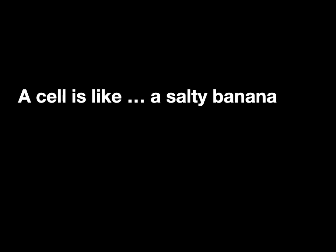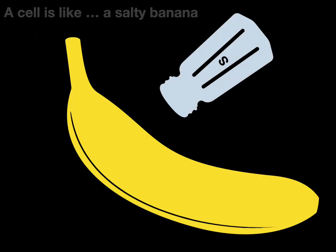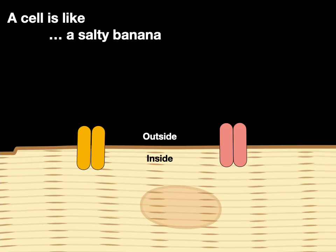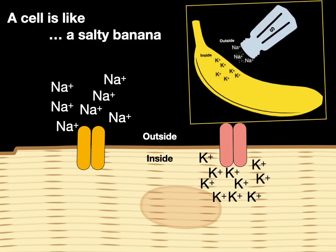Let's do a little review. A cell is like a salty banana. Here's a salt shaker and here's a banana. On the outside, the salt shaker dumps out sodium. And what's a banana known to have inside? Lots of potassium. A cell is like a salty banana — on the outside there's lots of sodium, and on the inside there's lots of potassium. A heart muscle cell is like a salty banana.